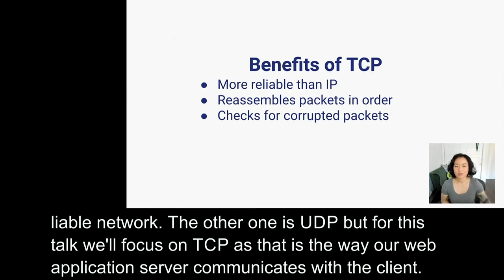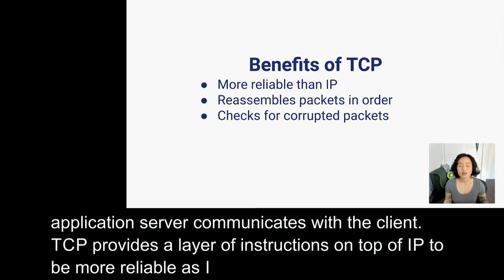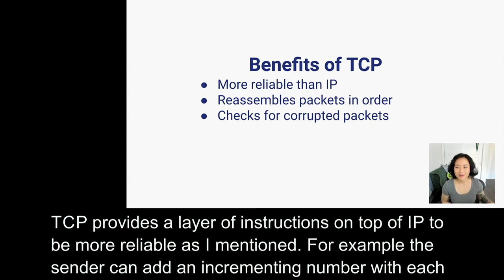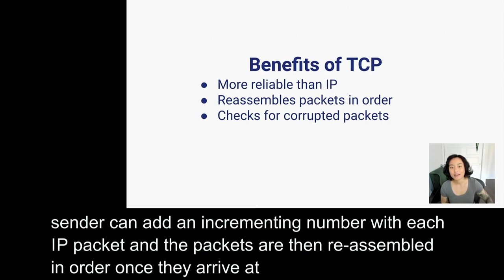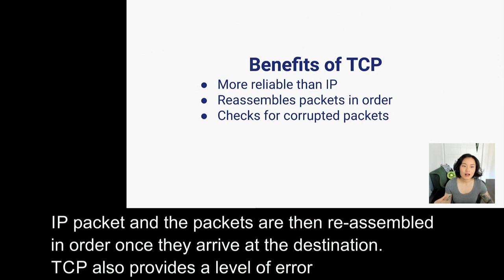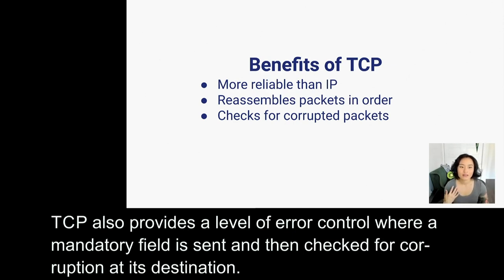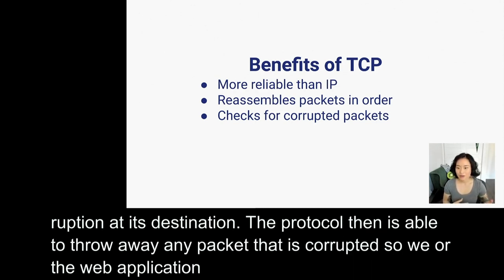TCP provides a layer of instructions on top of IP to be more reliable. For example, the sender can add an incrementing number with each IP packet, and the packets are then reassembled in order once they arrive at the destination. TCP also provides a level of error control, where a mandatory field is sent and then checked for corruption at its destination. The protocol is then able to throw out any corrupted packets, so that we, or the web application, won't have to worry about handling any corrupted data.